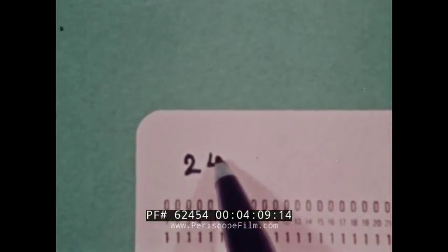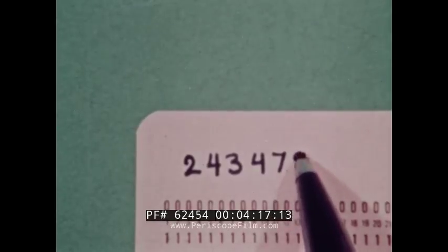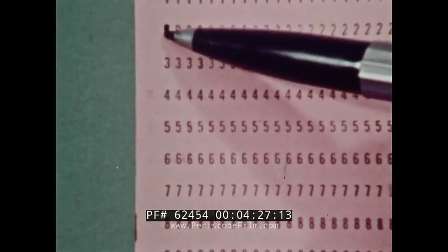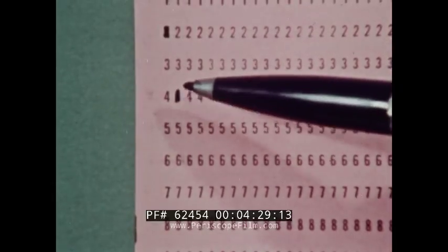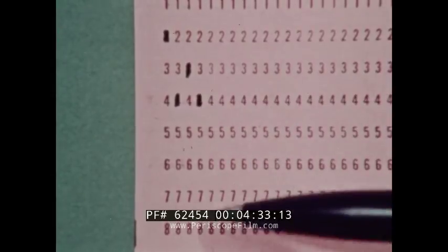For example, if we were to transfer 243,478 onto a card, the 2 would be punched in the first column, the 4 in the second column, a 3 in the third column, and so on through to the 8 digit in the sixth column.